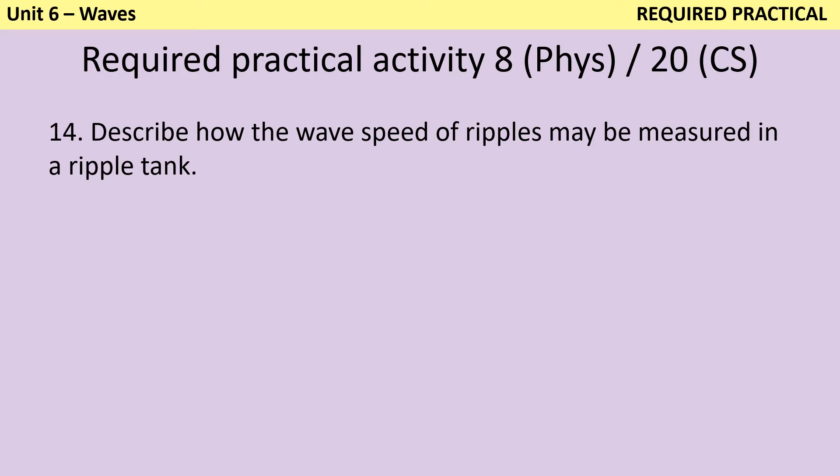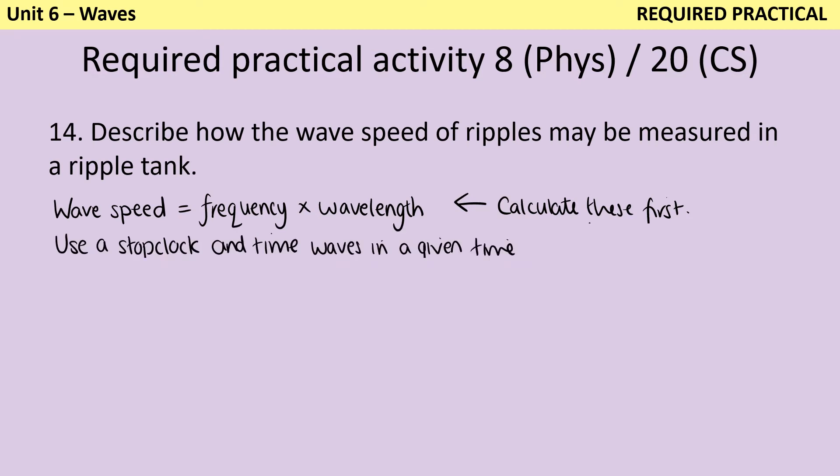Our next question is about the eighth required practical in GCSE physics, which is also the 20th required practical in GCSE combined science. So in order to work out the wave speed of ripples, there are two ways you can do it, and the main one is by using together the frequency and the wavelength. So we know that wave speed is frequency times wavelength, and so what you want to do is calculate these two values first and then use them together to calculate wave speed. So in order to calculate frequency, firstly we use a stop clock and we time how many waves happen in a given period of time. And then once we know that, we can do one divided by the time period for one wave in order to work out the frequency. Or if you're making your waves using an oscillator, which you usually are, you can probably just read the frequency off that oscillator.